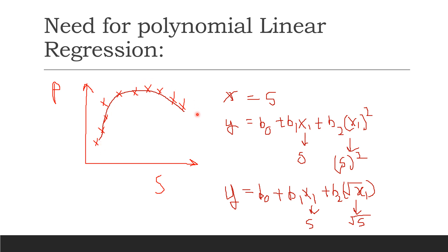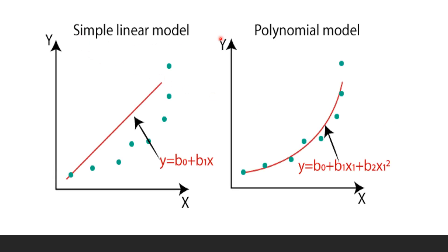Here is a comparison between the simple linear model and the polynomial model. In the simple linear model, a straight line is fitted onto a set of nonlinear data points, which cannot fit them accurately — the error would be very large. But with a polynomial model, the curve fits the nonlinear data points much better than a straight line. If we calculate the error between the two models, the polynomial model definitely works much better than the simple linear model. That's all for this video, thank you.